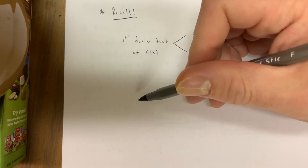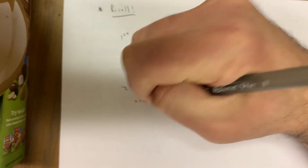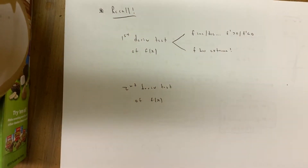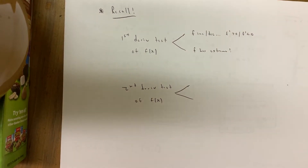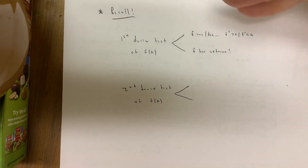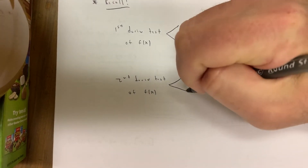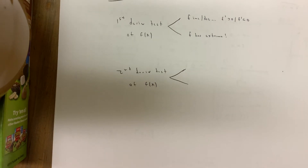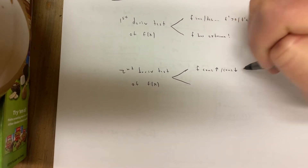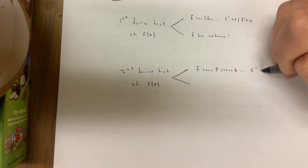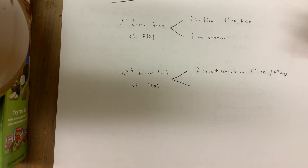There is actually a second derivative test in calculus — not really what we're writing down here. Our second derivative test is just the information the second derivative gives you about function f. You'd never justify that f is concave up on an interval because of the second derivative test that way. Our version tells you where f is concave up or concave down — where f double prime is positive or negative respectively.